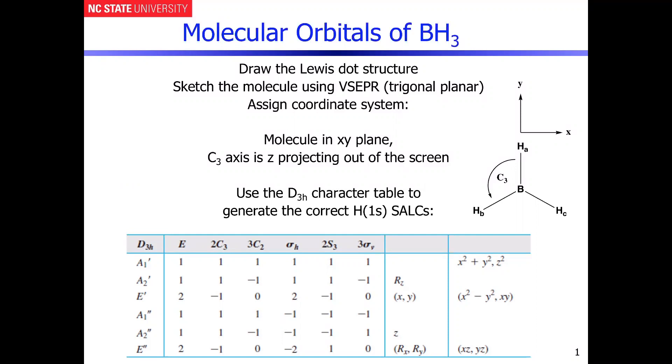you still have to start by drawing the Lewis dot structure of the molecule. And now, because we're working with BH3, this is a relatively simple molecule.